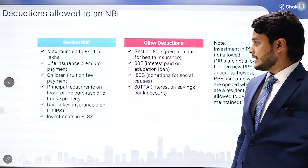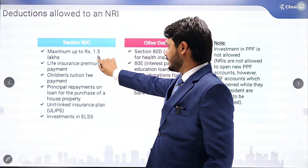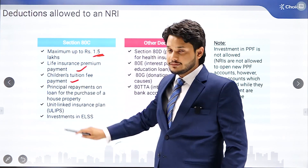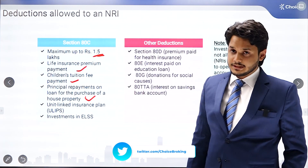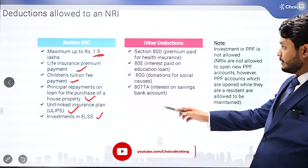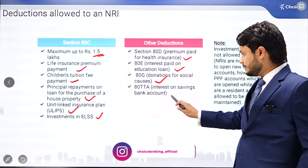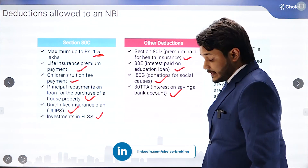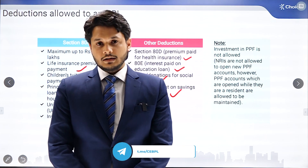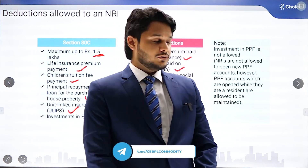Following are the deductions allowed to an NRI. Under Section 80C, at par with resident taxation, a maximum deduction of up to 1.5 lakh rupees is allowed, including life insurance premium, children's tuition fees, principal repayment on a housing loan for property situated in India, ULIPs, and ELSS investments. Other deductions under 80D, 80E, 80G, and 80TTA are also available to an NRI. However, new investments in PPF are not allowed for NRIs, though PPF accounts opened earlier will continue to be operational.